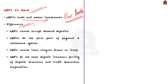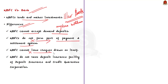The first difference is that NBFCs cannot accept demand deposits — a demand deposit is money deposited that can be withdrawn at any time without advance notice. The second difference is that NBFCs do not form part of the payment and settlement system and cannot issue checks drawn on themselves. The third major difference is regarding deposit insurance facility — unlike banks, the deposit insurance facility of the Deposit Insurance and Credit Guarantee Corporation is not available to depositors of NBFCs.